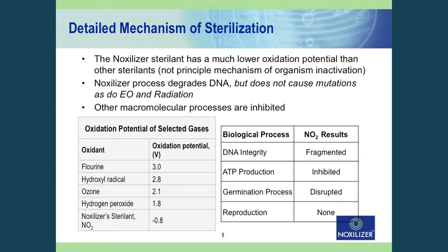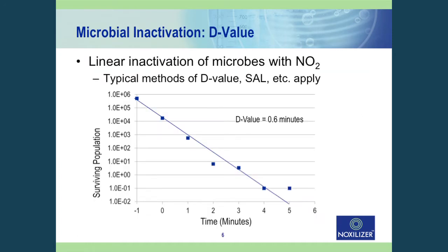With every sterilization process, you have to show the inactivation curve or the D-value curve. For the conditions here — 5 milligrams per liter NO2 concentration in the chamber — you can see that we had a D-value of about 0.6 minutes and a linear 6-log reduction of the spore population over the full exposure time shown.